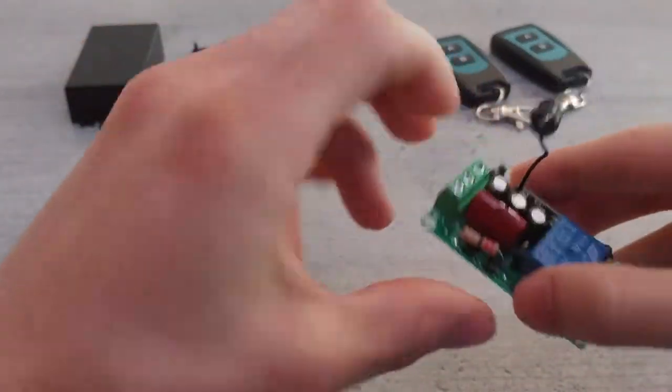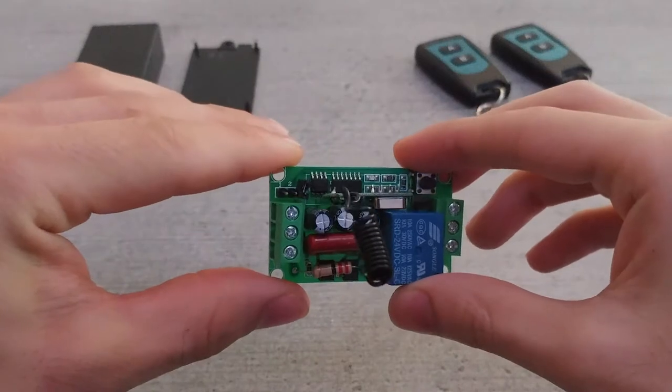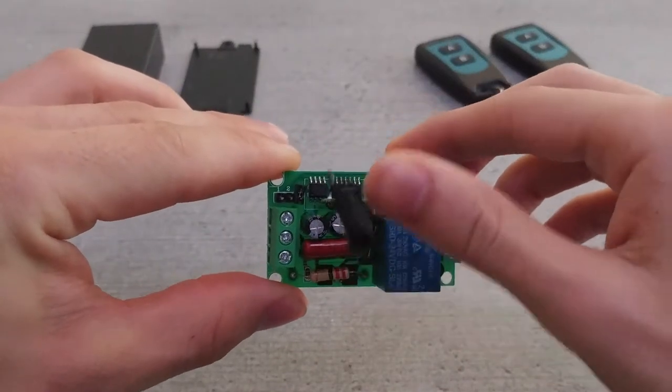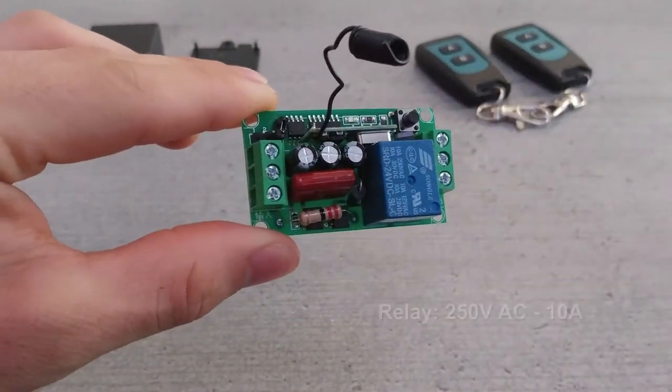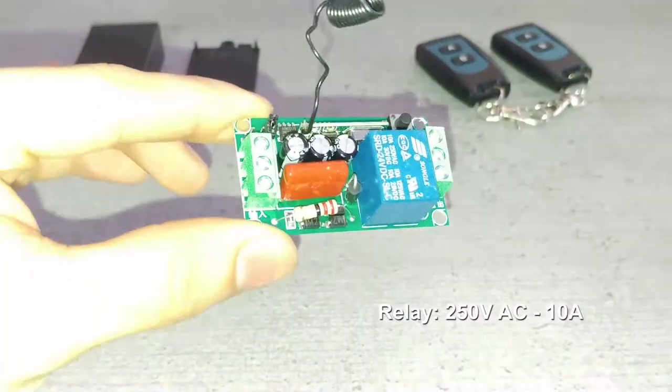This is a very simple one channel wireless remote control switch. Inside we have a relay that is able to handle up to 250 volts AC at 10 amps.